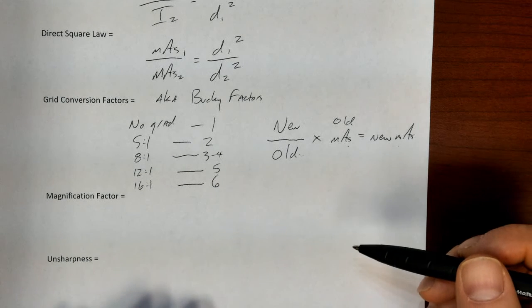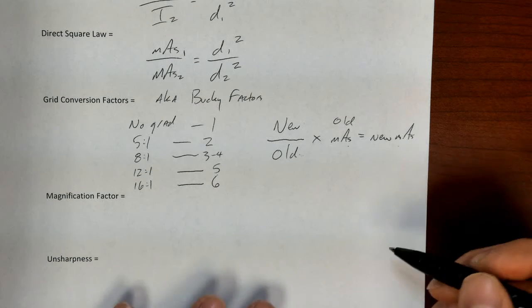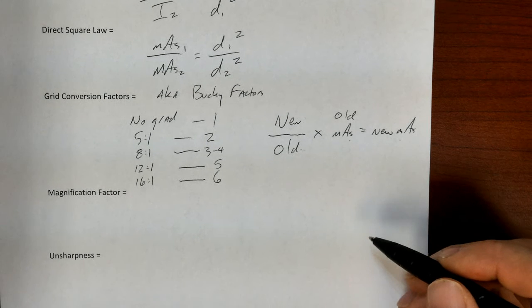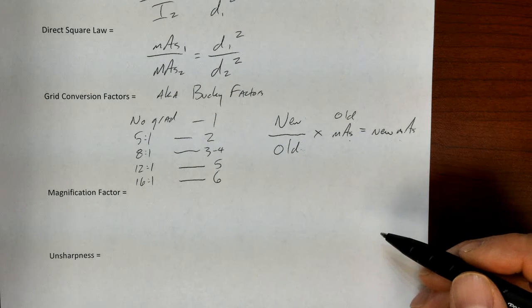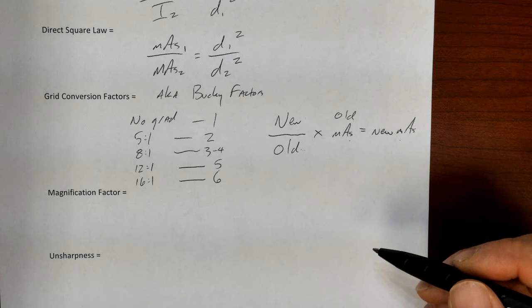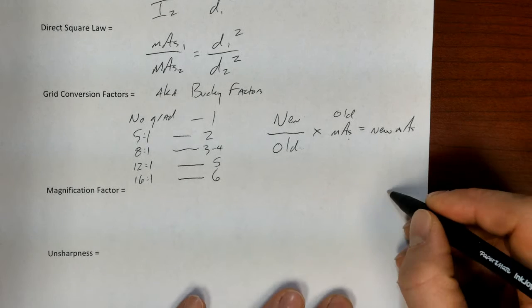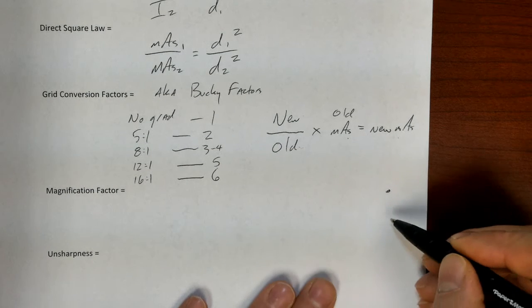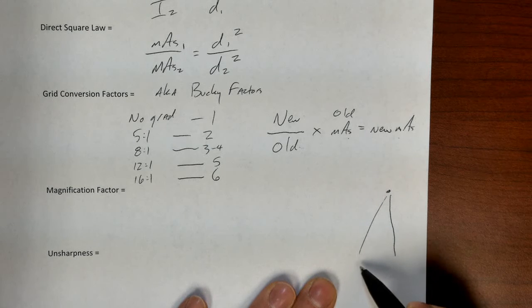Okay, the final set of formulas, it's going to be important to have in the back of our mind some relationships that are geometrical in nature. So I want to draw these out here for us. So we've got a point source of radiation that's emanating x-rays in a divergent pattern.